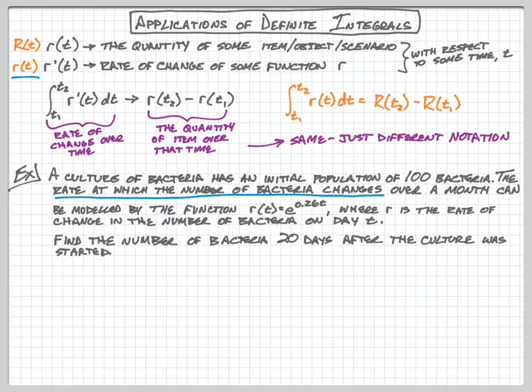First, we can note that this says the rate at which the number of bacteria changes, so we are looking at the rate of change. Notice also that the notation set up for us uses this side, so we're going to use the orange notation. Also notice that it says the initial population is 100 bacteria, so the quantity of bacteria at time zero is 100. Here is our equation: the integral from 0 to 20 of e^(0.26t) dt.